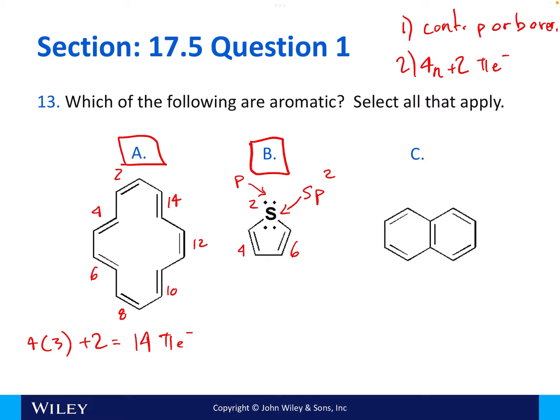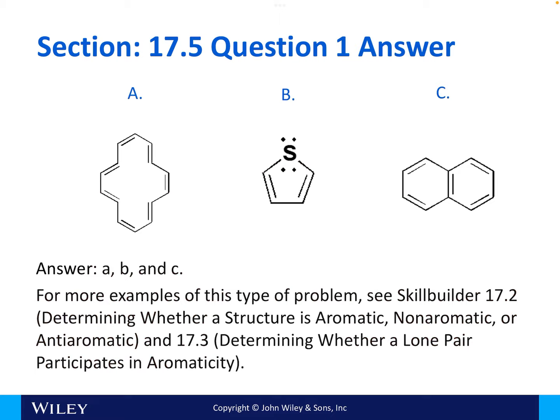Now, if we come over here to C, counting our pi electrons: two, four, six, eight, ten. And if we do four times two plus two, that will give us ten electrons. So, it is also meeting Huckel's rule. All of them had continuous p orbitals. And so, in fact, A, B, and C are all aromatic structures.